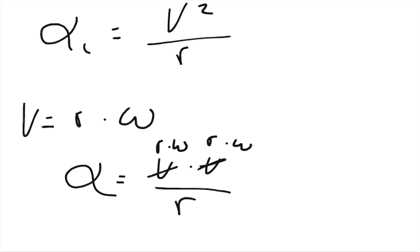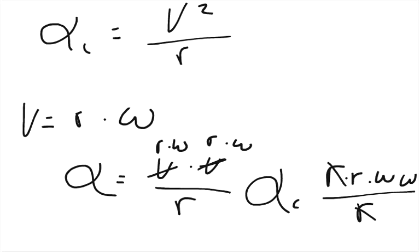We can replace each one of these v's with radius times angular speed. So what we get is the centripetal acceleration equals r times r times omega, times omega, over r. One of the r's is going to cancel out. So our final equation for centripetal acceleration equals the radius times the angular speed squared.